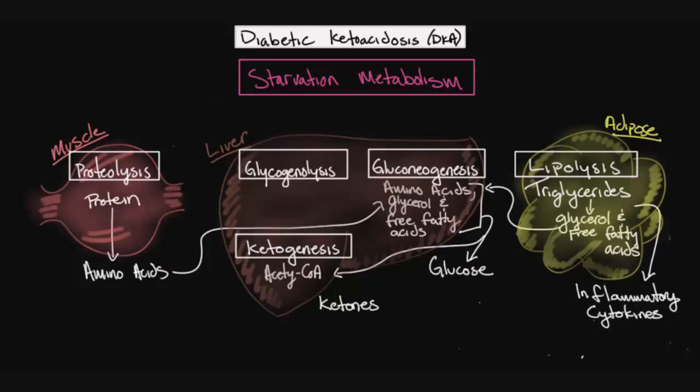So we mentioned that the purpose of starvation metabolism is to produce glucose and ketones. So the ketogenesis is where ketones come in here. And it's the metabolic pathway for the creation of, or the genesis, of ketones. And it utilizes the acetyl-CoA from gluconeogenesis, which then undergoes a series of reactions to produce ketones.